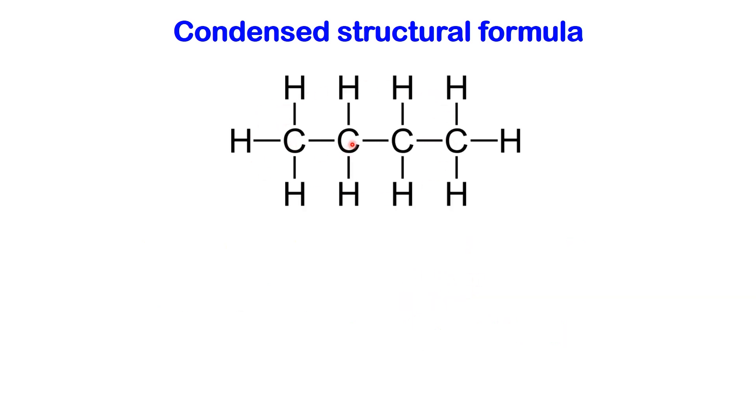This condensed and more compact representation is called a condensed structural formula. I have the displayed formula of butane here, which I'll use to illustrate its condensed structural formula. In condensed structural formulas, bonded atoms are grouped together.